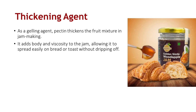As a gelling agent, pectin thickens the fruit mixture in jam making. It adds body and viscosity to the jam, allowing it to spread easily on bread or toast without dripping off.